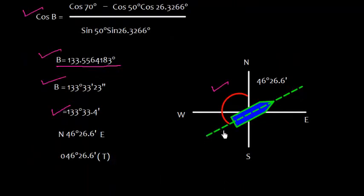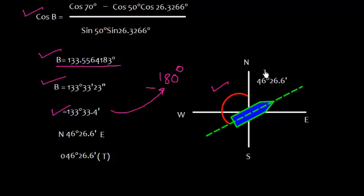Since this angle B is 133° 33.4' and the ship is heading in this direction, we subtract from 180°: 180° − 133° 33.4' = 46° 26.6'. So the final course is 046° 26.6' True.